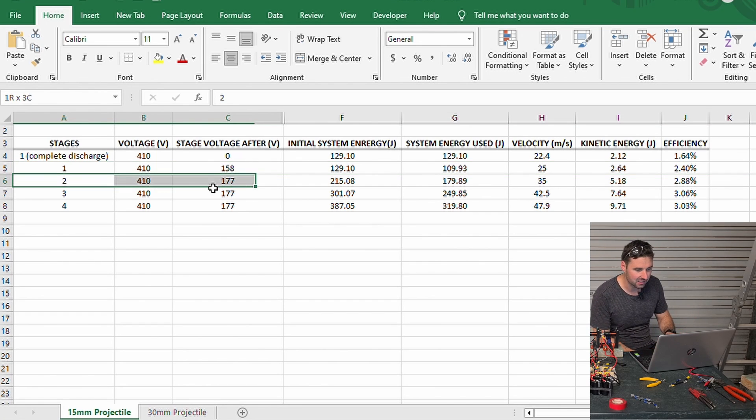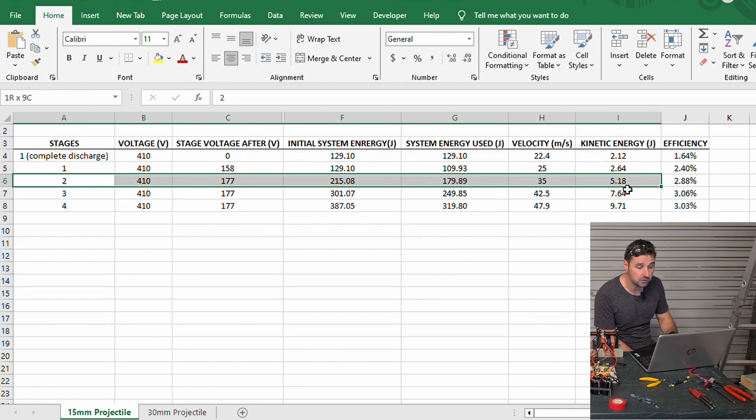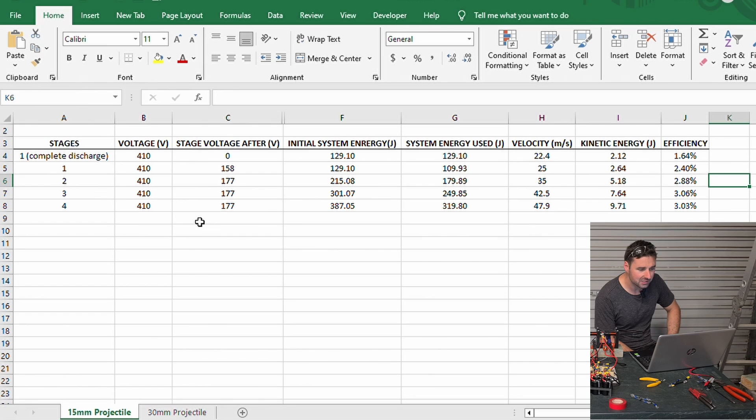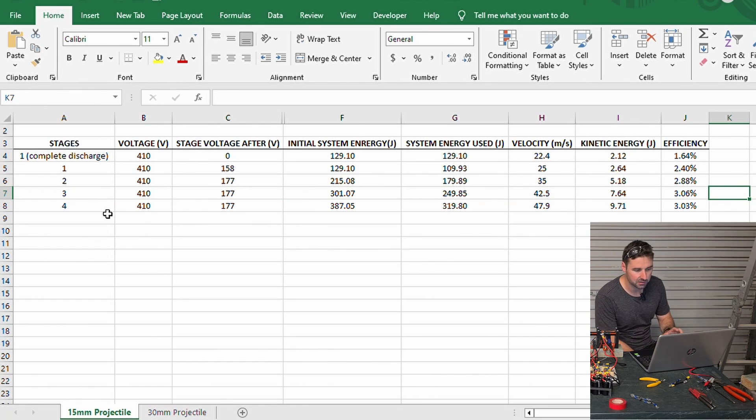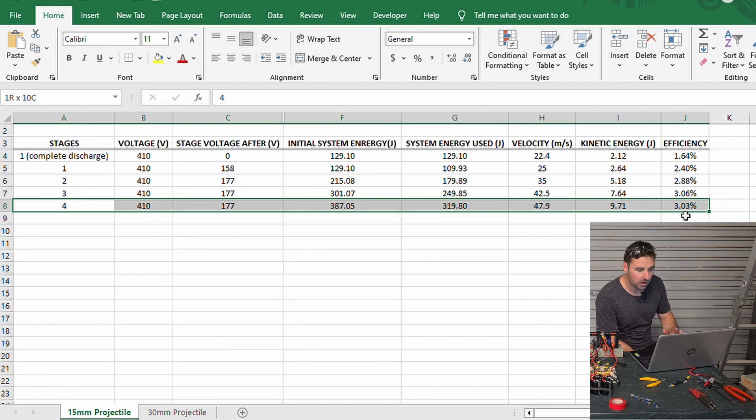With the second stage added in, the energy of the projectile rose to 5.18 joules with an efficiency of 2.88 percent. Followed by the third stage at 7.64 joules at 3.06 percent efficiency, and finally the fourth stage increased the projectile's energy to 9.7 joules at an efficiency of 3.03 percent.